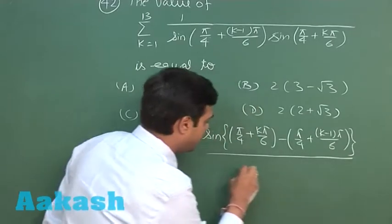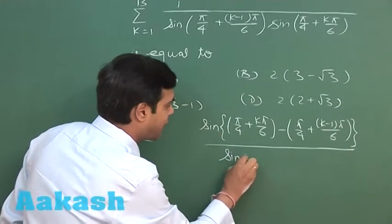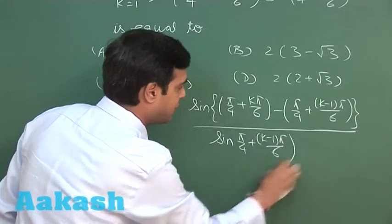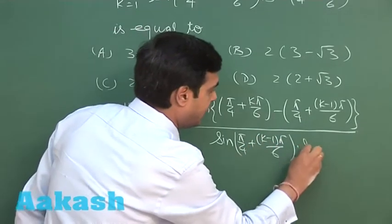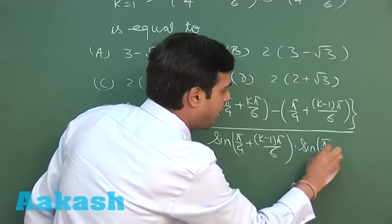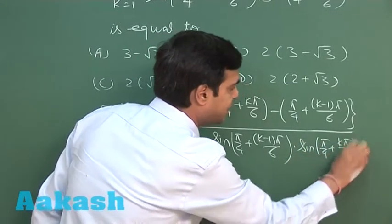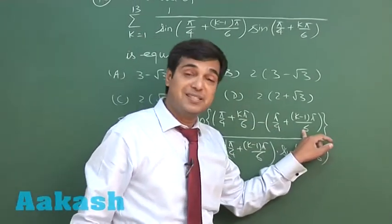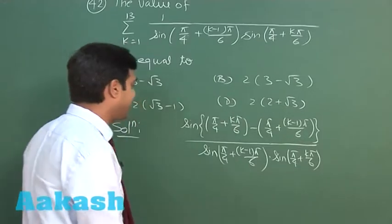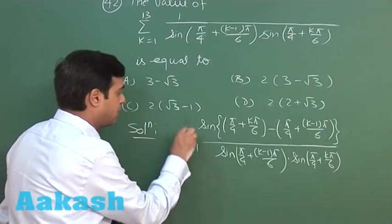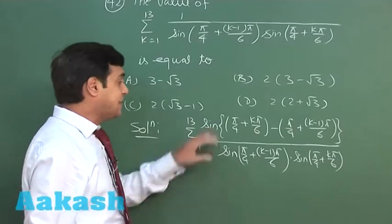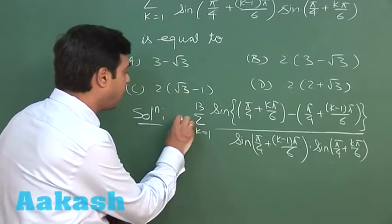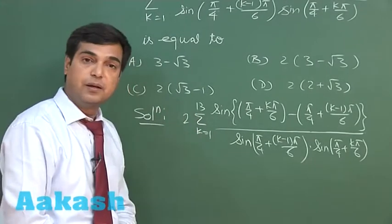The difference here we can see π/4 is cancelled, kπ/6 is cancelled, simply π/6. So sin(π/6) in numerator, sin(π/6) in denominator means 1 upon half or simply 2, right.